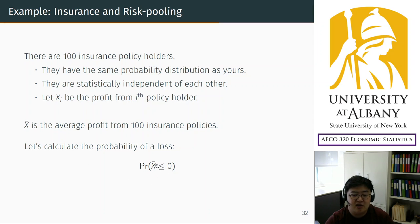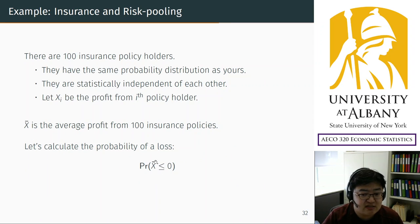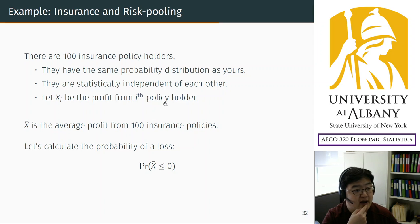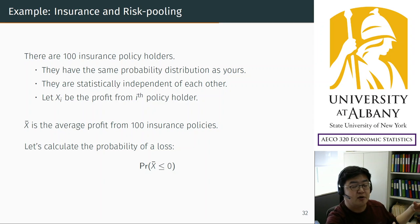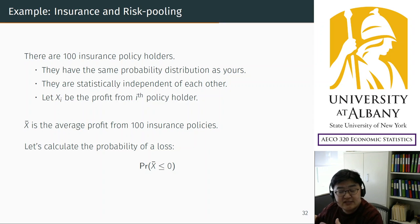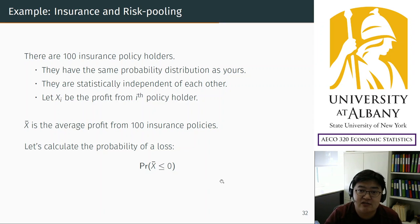Let's calculate the probability that x-bar is negative — that is, the probability the average profit is negative. This is about the sampling distribution because the sample size is 100. One year with 100 insurance holders is like one experiment; alternatively, one insurance company with 100 customers versus another company with a different set of 100 drivers. With 100 as a whole being one experiment, this distribution is a sampling distribution, so we can apply the theorems we learned.